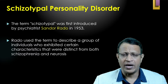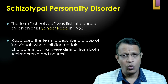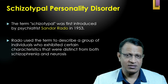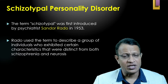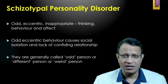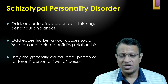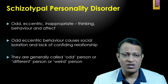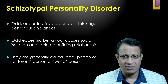The term 'schizotypal' was coined by psychiatrist Sander Rado in 1953. He described a group of individuals who exhibited certain characteristics distinct from psychotic symptoms or neurosis — neither schizophrenia nor anxiety disorder. He observed that they had odd, eccentric, inappropriate thinking, behavior, and mood. This odd eccentric behavior pushed them away from socializing, and they lack confiding social relationships. They are invariably called odd, weird, or different persons in society.